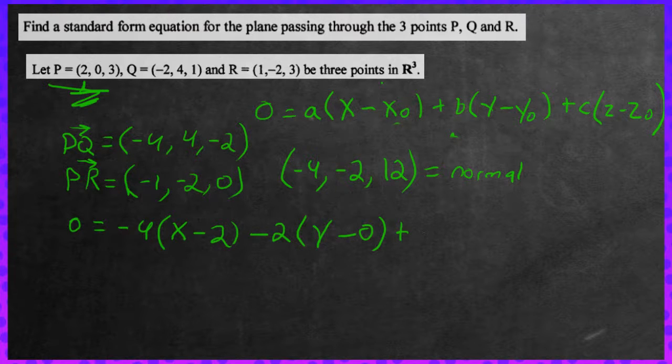Then plus C. C is going to be 12. And I think we're going to hang of it by now. Then we have Z minus Z0. Z0 would be the component of 3 right there. So minus 3.